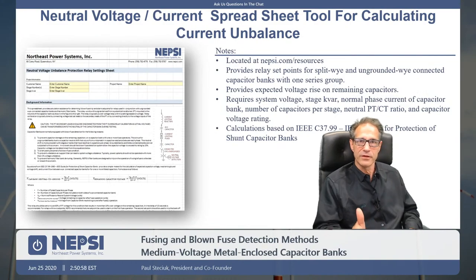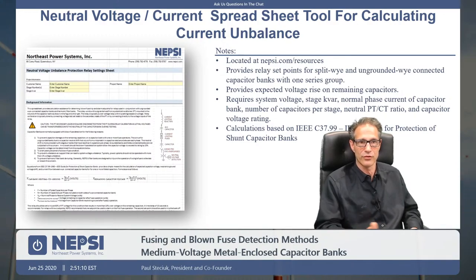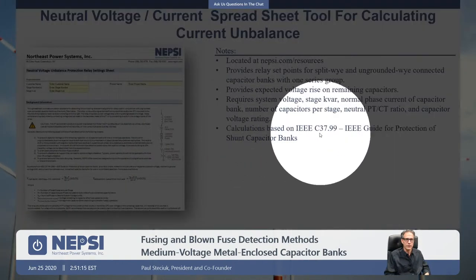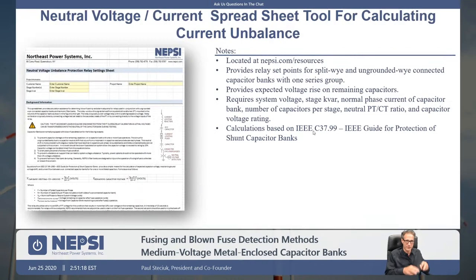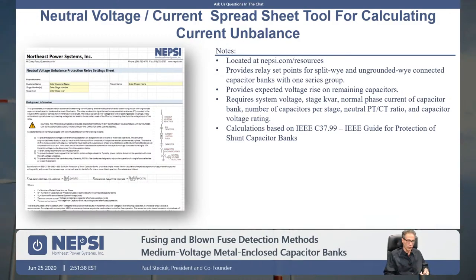Our website has a spreadsheet tool for calculating neutral voltage current and neutral voltage associated with blown fuse conditions in accordance with IEEE C37.99. You'll be able to go to our website and get that data to set your relays. When you buy a cap bank or filter bank from NEPSI, we set those relays before they leave the shop — running primary current through the CTs to verify that an unbalanced current flow at the level of one blown fuse will trigger a trip or alarm.